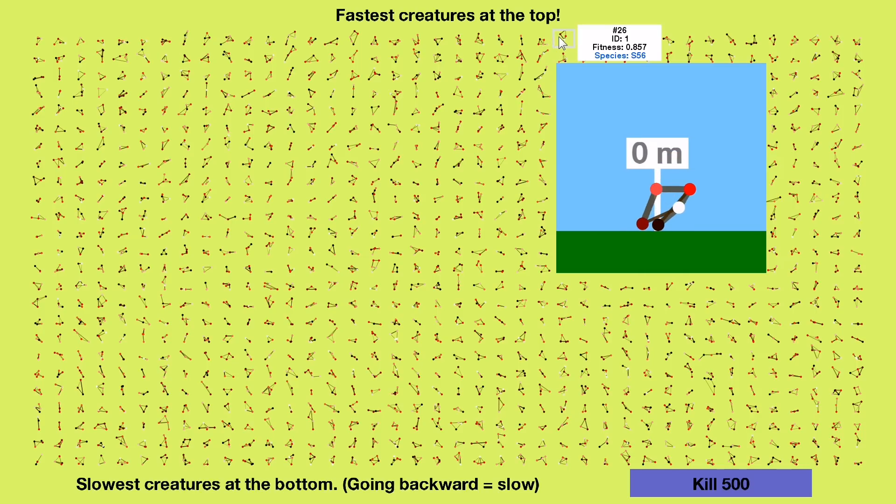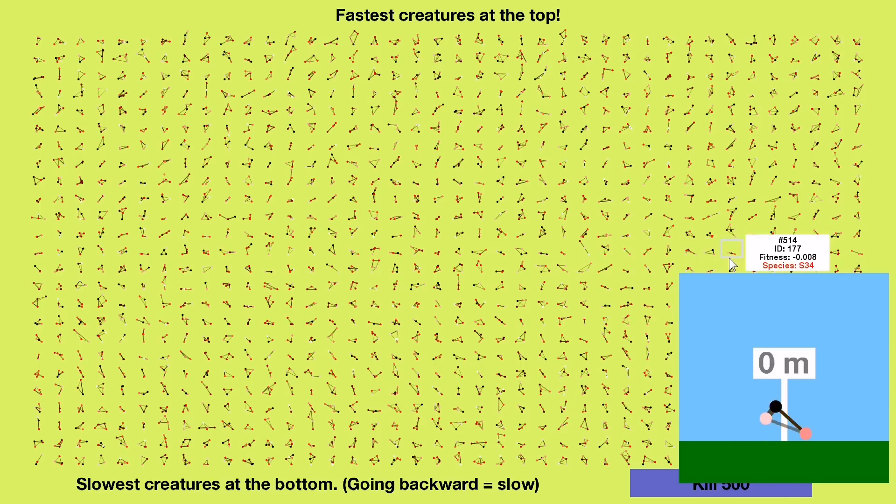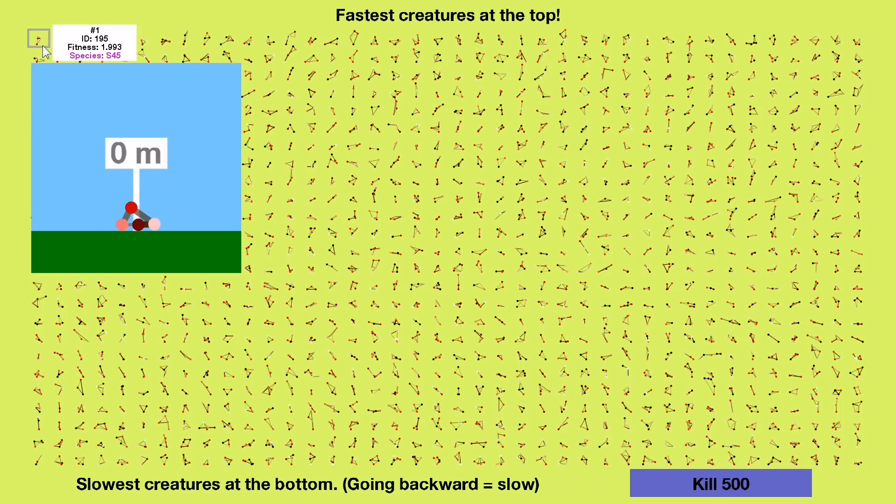which puts it in the top 3%. I guess it's not hard to do well when your competition is all randomly generated. Creature 195 managed to do the best out of all 1,000, traveling almost 2 meters in just 15 seconds.